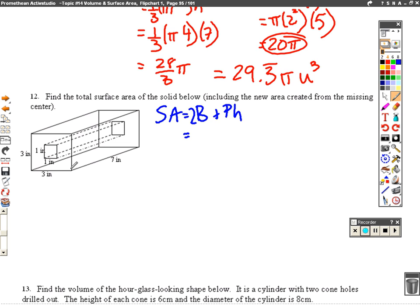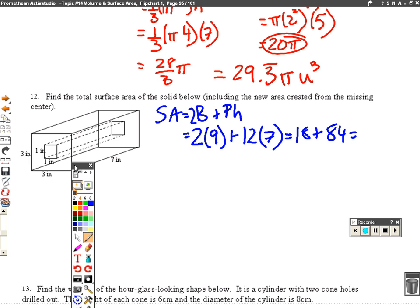Alright, well the base is a 3 by 3 square. So I have 2 times, well the area of that 3 by 3 square would be 9. Plus the perimeter of a 3 by 3 square would be 3 plus 3 plus 3 plus 3. So that would be 12. And the height they tell us is 7. So this is like the entire box. So 2 times 9 is 18. Plus 12 times 7. Which is 84, obviously. And add that to 18. And we get 102 inches squared.